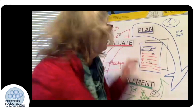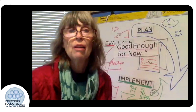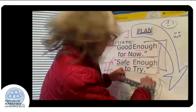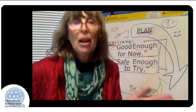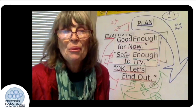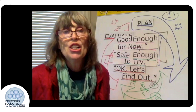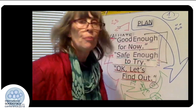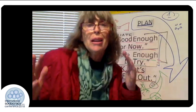Then I share three mantras in sociocracy as a result of this. First: 'It only has to be good enough for now' — straight out of the book 'We the People.' Second: 'It only has to be safe enough to try' — from a holacracy seminar, though many people say it now. Third — one I made up: 'Okay, let's find out.' The idea is that we have far more freedom, peace of mind, lower tension, and higher ability to take a chance when we know the proposal only has to be good enough for now, safe enough to try — and then we just find out.